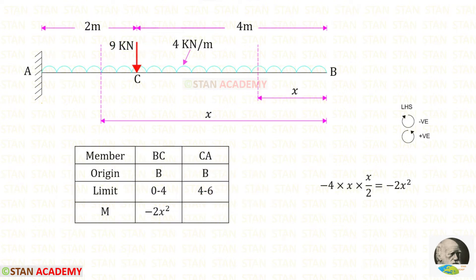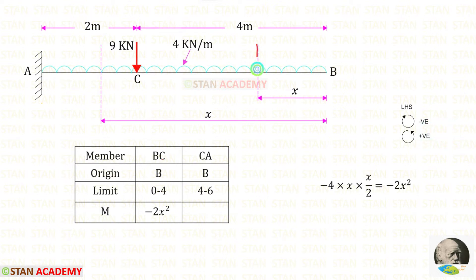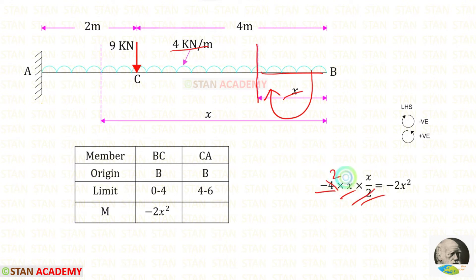Now let us find the moment M in the section BC. We find moments from point B, moving towards the left-hand side, where clockwise is negative and anti-clockwise is positive. Up to the section we have only the UDL of 4 kN/m, which acts in the clockwise direction, so it is negative. For UDL we multiply by distance and distance divided by 2, giving X × X/2, which simplifies to 2X². So M in BC equals minus 2X².